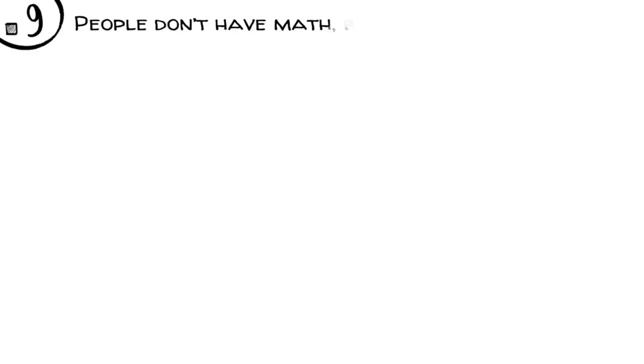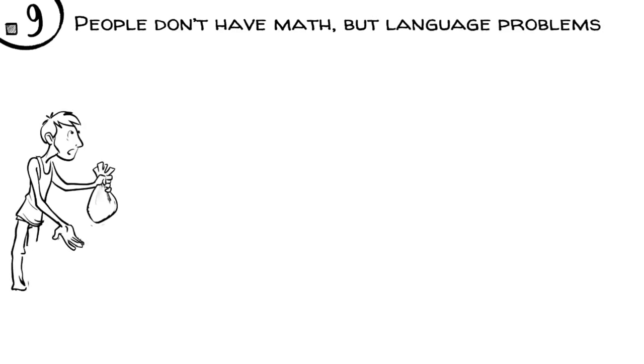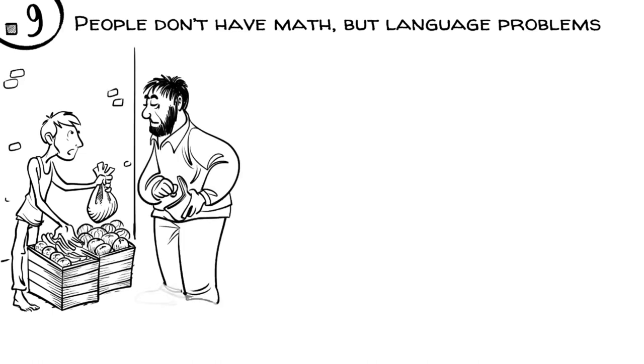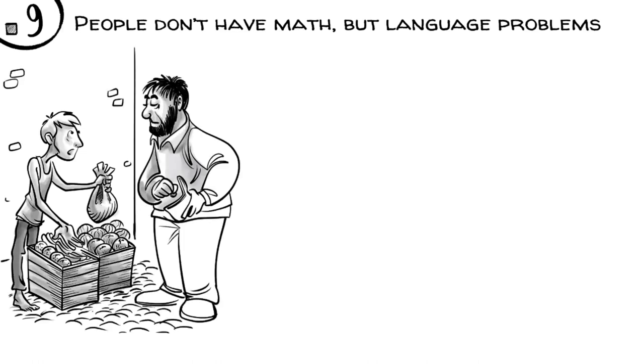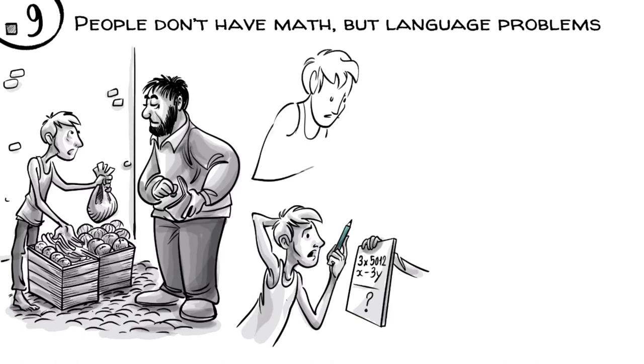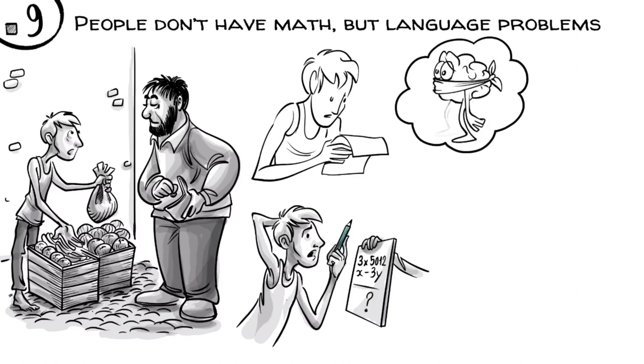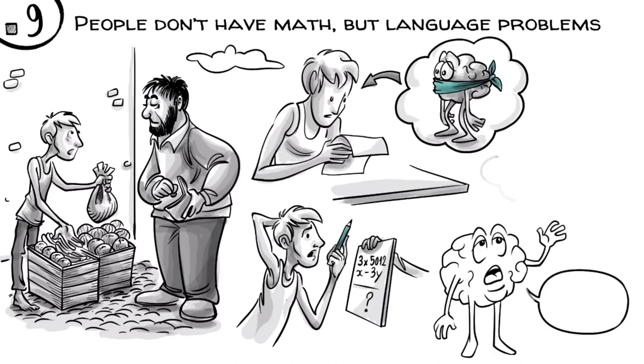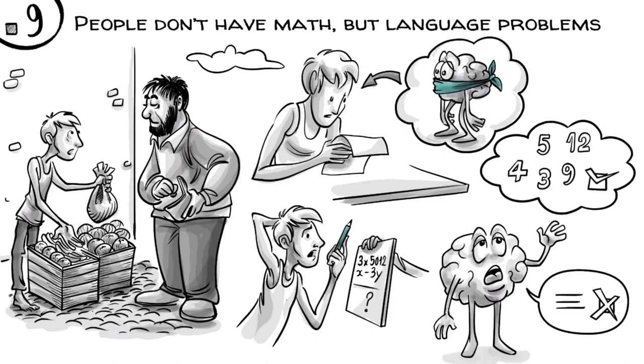Most people don't have math but language problems. We know, for example, that eleven-year-old unschooled street vendors are often highly proficient in complex money transactions but incapable of doing paper and pencil arithmetic. This phenomenon, known as street mathematics, shows that when smart kids struggle in school, they often just can't express their thinking in symbols. Their brains can do math but have language problems.